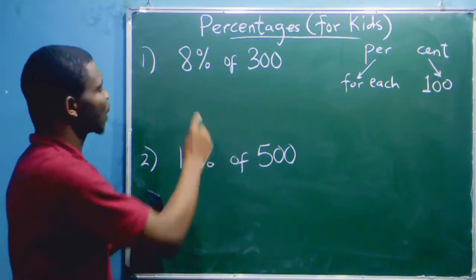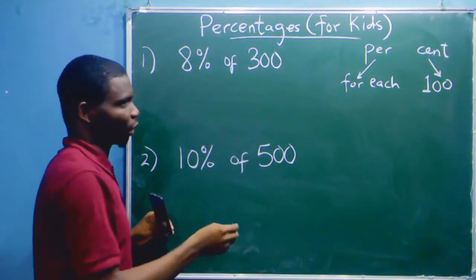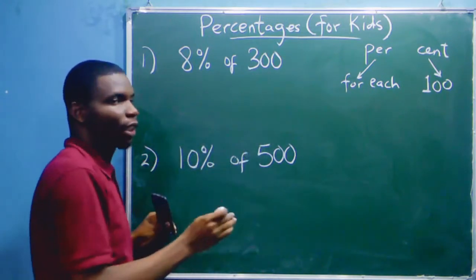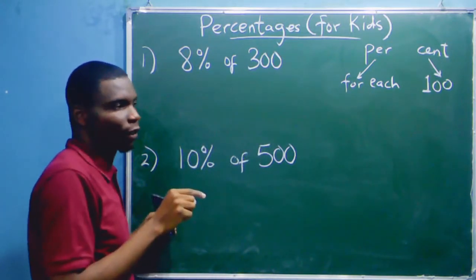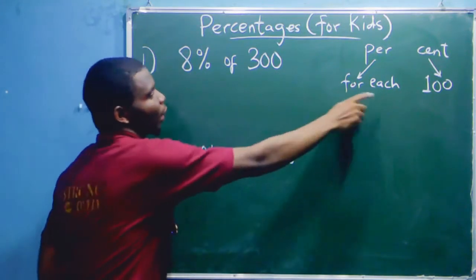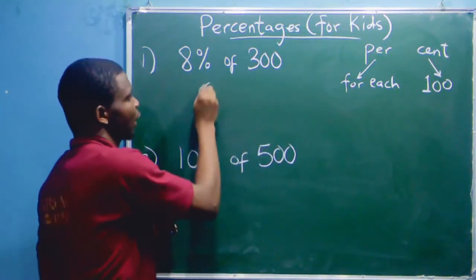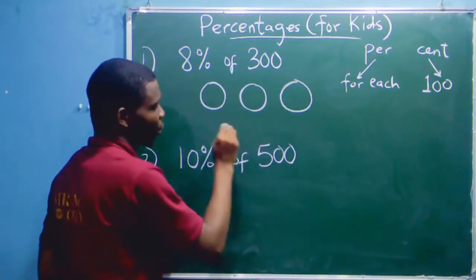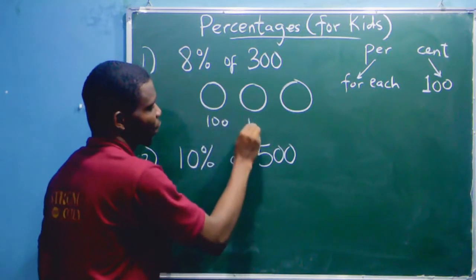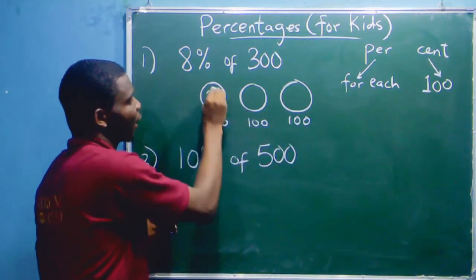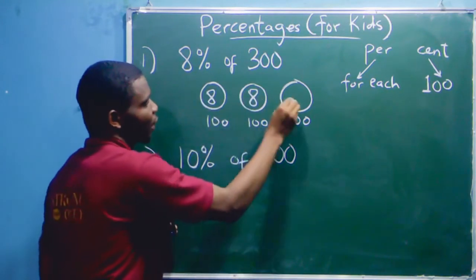explain this? When we say 8% of 300, for each hundred of this 300, you take 8. Eight for each hundred. So let's break this 300 into hundreds: 100, 100, 100. For each hundred, you have 8.